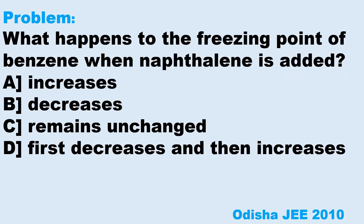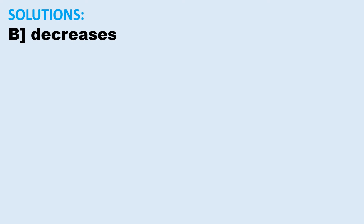What happens to the freezing point of benzene when naphthalene is added? A. Increases. B. Decreases. C. Remains unchanged. D. First decreases and then increases. The freezing point of benzene decreases when naphthalene is added to it. Thus option B is correct.